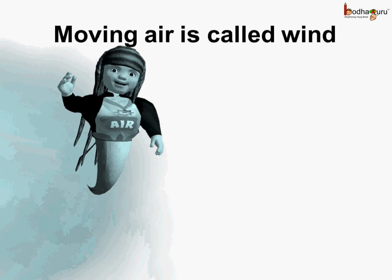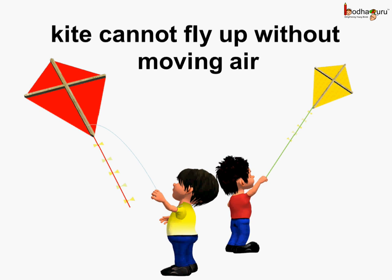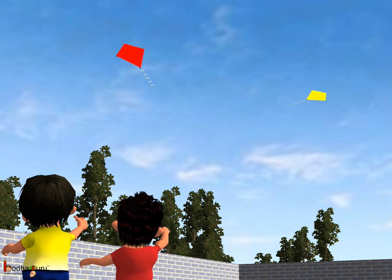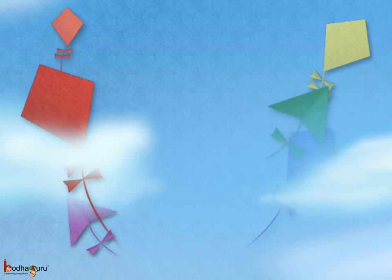The moving air is called wind, and wind is very useful to us. Can the kite fly in the sky without the moving air? No, it is not possible. The kite flies up in the sky when there is wind.